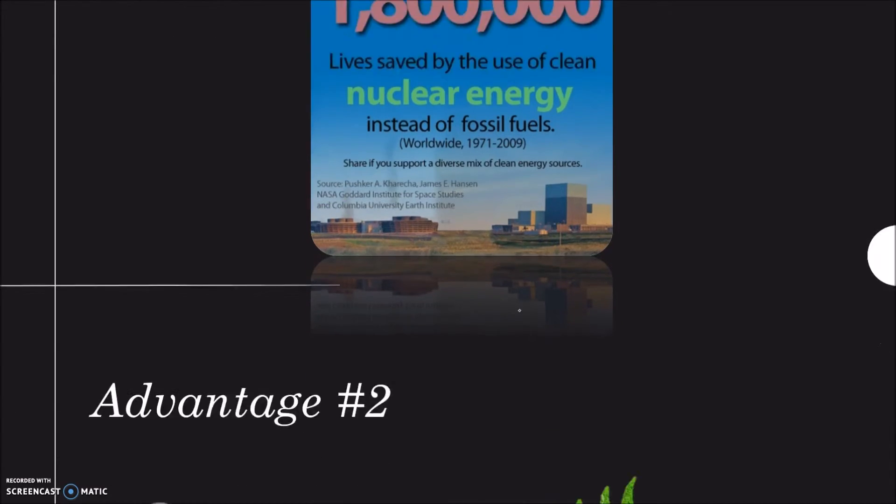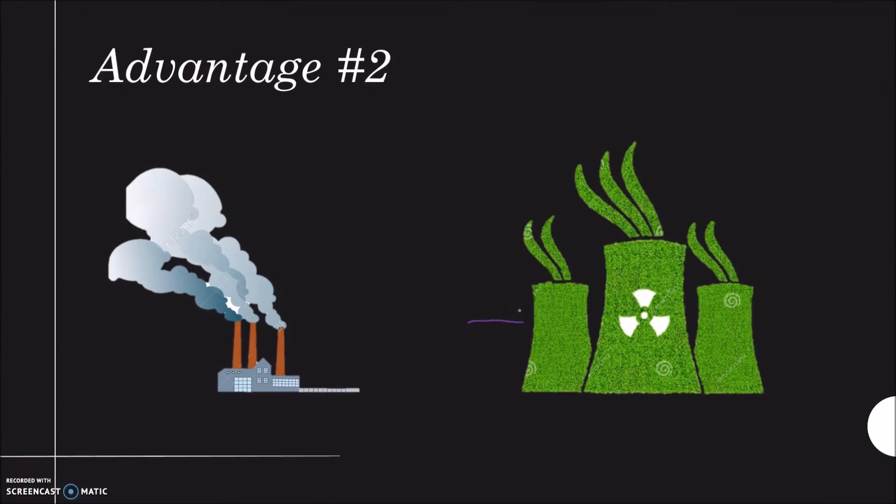The second advantage of nuclear reactors is also closely related to fossil fuels. The problem with them is that they release a lot of pollutants into our atmosphere that cause things like the greenhouse effect, which we as a human race do not want our planet to have. Nuclear reactors, on the other hand, do not release gas into the atmosphere.